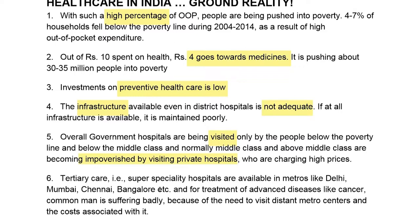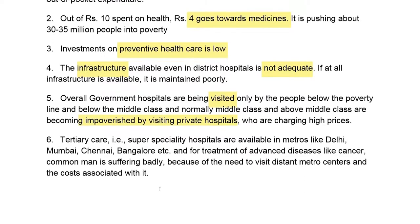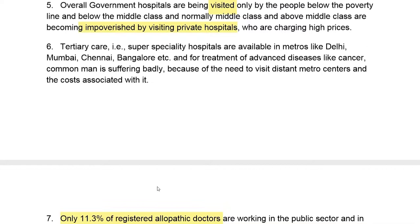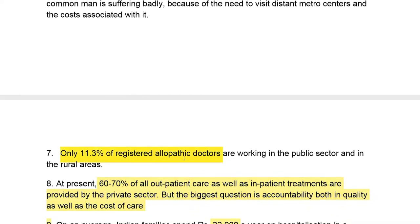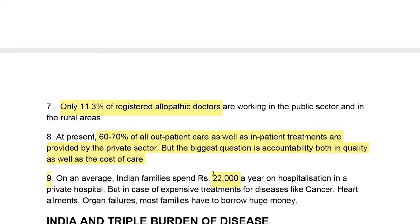The remaining population has been visiting only private hospitals which are charging very high prices. Even for tertiary care, people generally prefer only private hospitals in metropolitan cities — you can understand how a poor family suffers if they have to travel to a tertiary care hospital in a nearby city. Only 11.3% of registered allopathic doctors are working in the public sector, and the remaining are in private sector. 60-70% of patients, both out-patient and in-patient, are in the private sector, meaning only 30% are in the public sector.